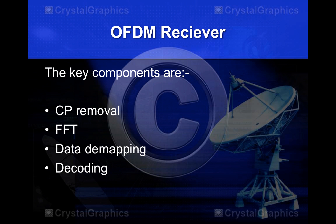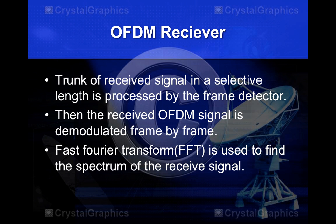Moving on to the third and final phase — the OFDM receiver. The key components are CP removal, FFT, data demapping, and decode. After the signal is passed from the channel, a trunk of the received signal of a selected length is processed by the frame detector. The received OFDM signal is then demodulated frame by frame, similar to the modulation process, and Fast Fourier Transform is used to find the spectrum of the received signal.